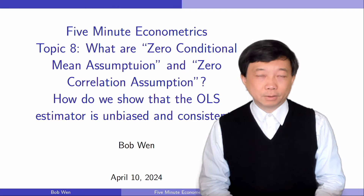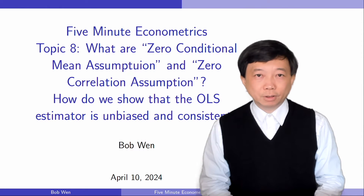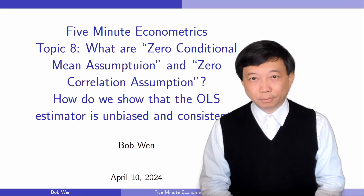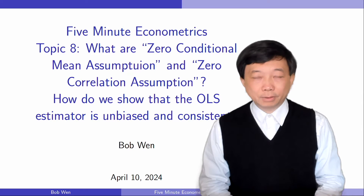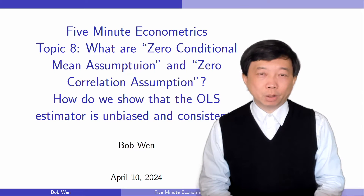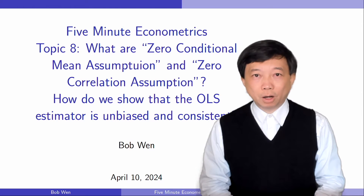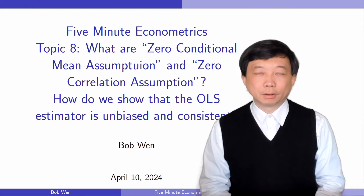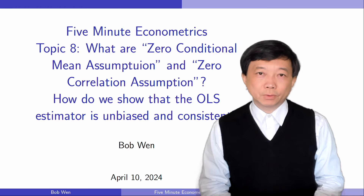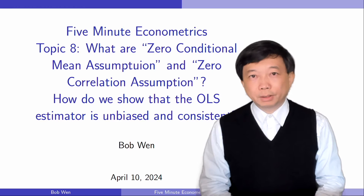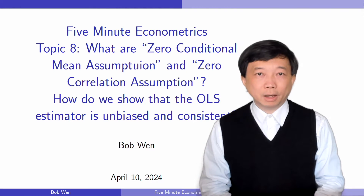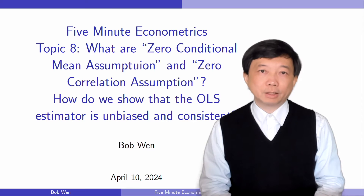The zero conditional mean assumption states that the error term epsilon has an expected value of zero given any value of the explanatory variable x. It concerns how the error term epsilon and the explanatory variable x are related.